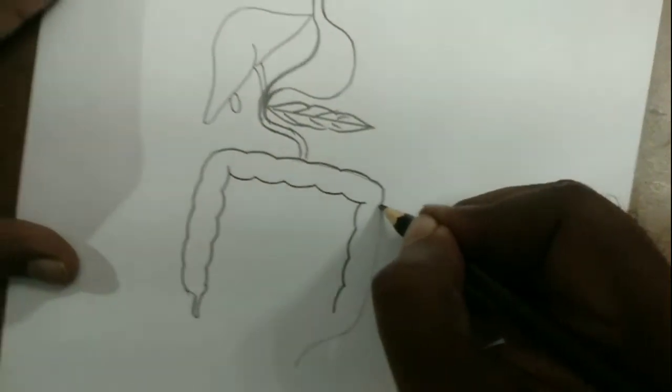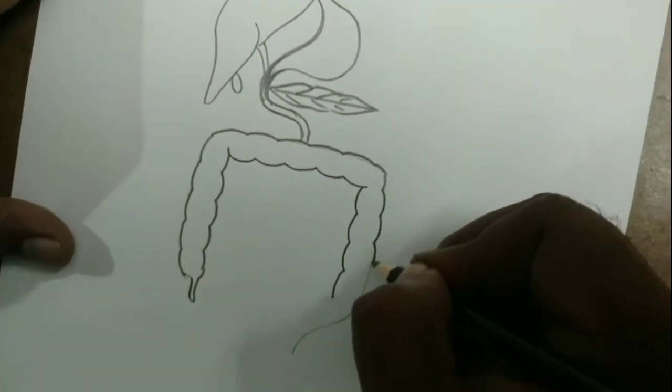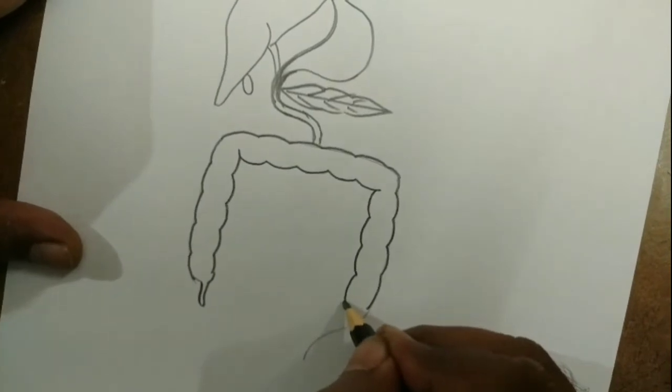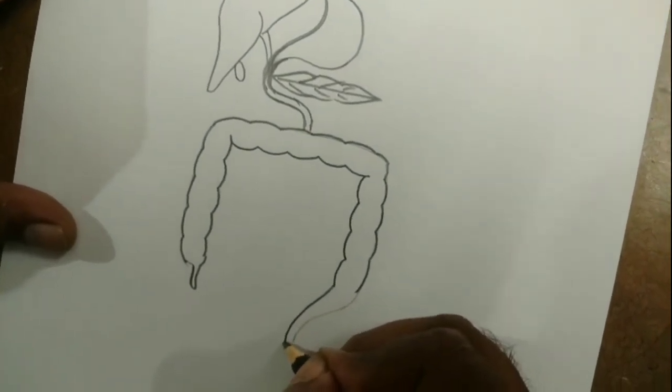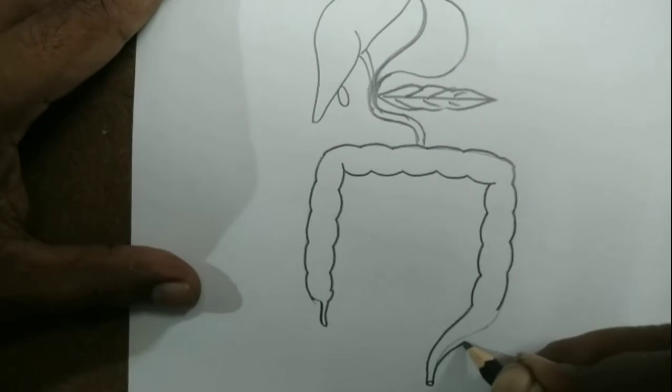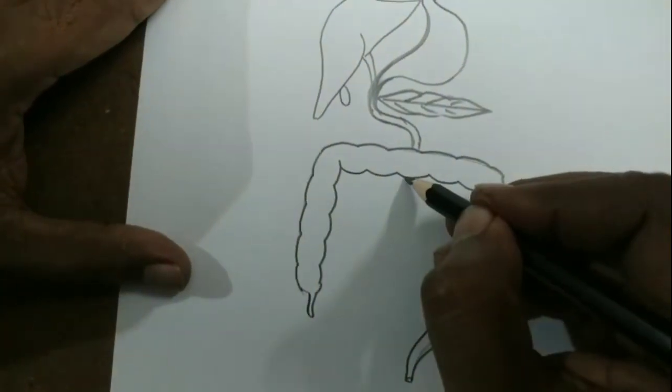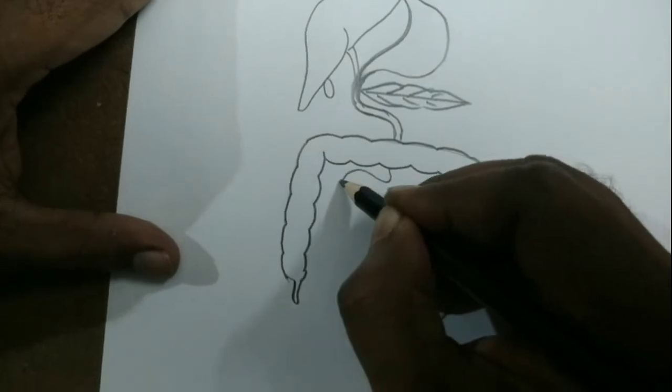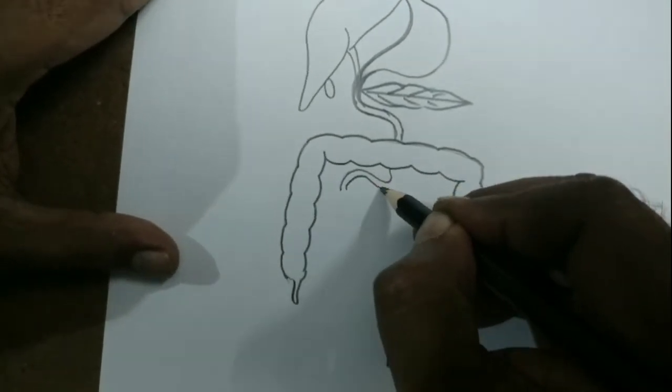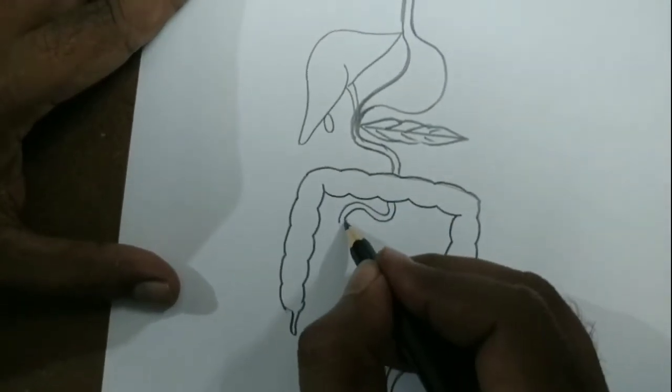Now it ends with the large intestine, which ends with the rectum and anus. Now we have to draw the small intestine. It is a very highly coiled tubular structure.